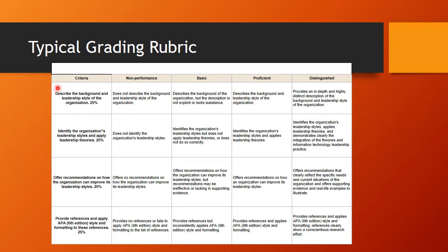This is a grading rubric from one of the FlexPath courses. The criteria says: describe the background and leadership style of the organization. Non-performance means you did not describe the background — you did not cover any part of this criteria. The basic level, which would be a C in most instances if we were translating, is to describe the background of the organization but the description is not explicit or lacks substance — probably one sentence that very lightly described the background and leadership style of the organization.